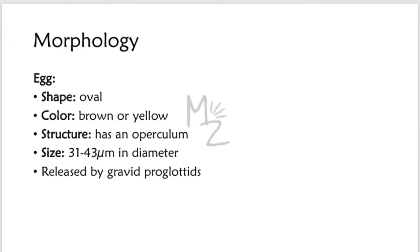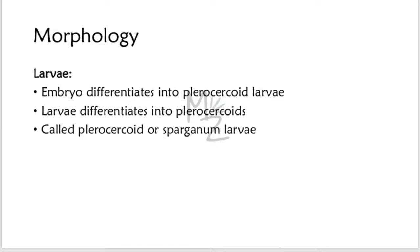Larvae: the embryo present inside the egg differentiates into plerocercoid larvae. Then this plerocercoid larvae differentiates into plerocercoids, also called sparganum larvae. The larvae are responsible for causing diphyllobothriasis.